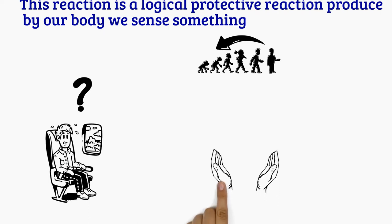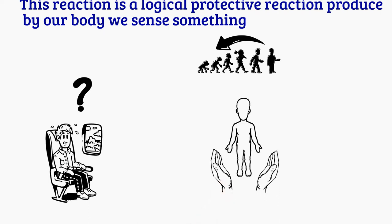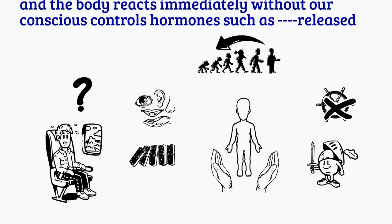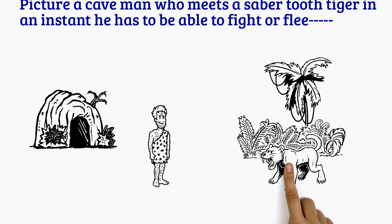This reaction is a logical protective reaction produced by our body. We sense something and the body reacts immediately without our conscious control. Hormones such as adrenaline are released. Picture a caveman who meets a saber-toothed tiger. In an instant, he has to be able to fight or flee.